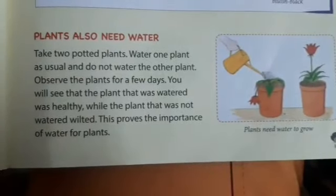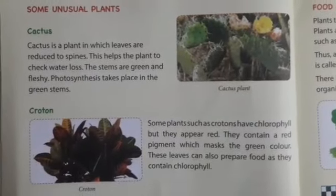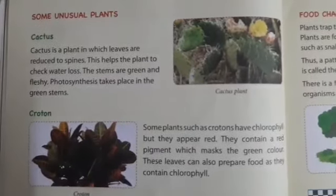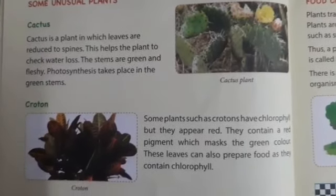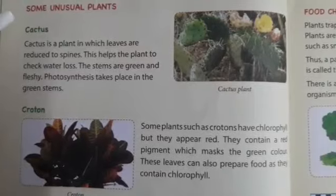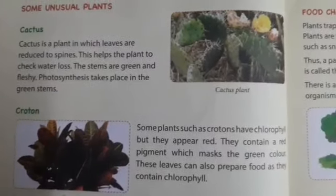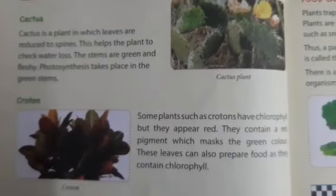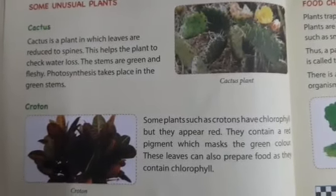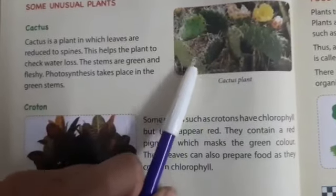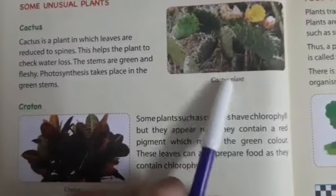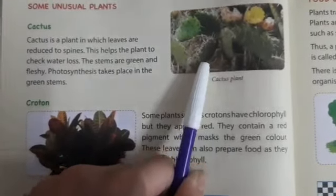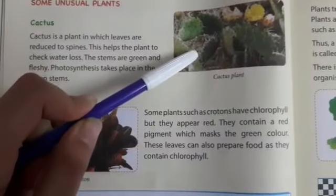Ab next topic pe chalte hai. The next topic is some unusual plants. Ab hum log daily life mein normal plants dekhte hai that have normal leaves, roots, stem. But there are some plants that are usually different from the others. Ab iska example lete hai. The first one is the cactus. Cactus is the plant that has leaves that are reduced to spines. So these plants have spines, as you can see in the image. These are called spines. And these plants also contain chlorophyll, so the process of photosynthesis is taking place in the green stem of this plant.